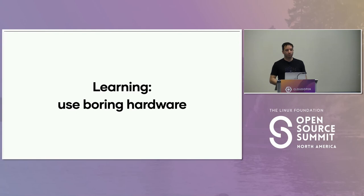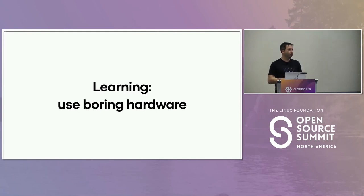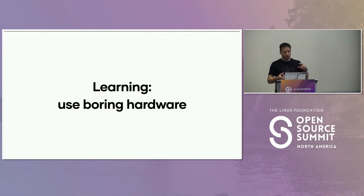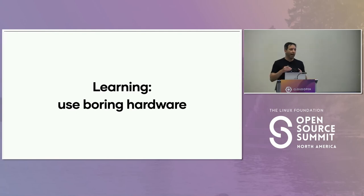The fancy hardware your vendors will sell you is not the stuff you want. Figure out what you need, figure out what you can build. This project was built on Raspberry Pi 2s — we're talking 2022 using 2015–2014 hardware. One gig of RAM, 900 megahertz of CPU. In production until 2026 — 11 to 12 years after it was originally introduced. That is power. Boring hardware is good hardware.